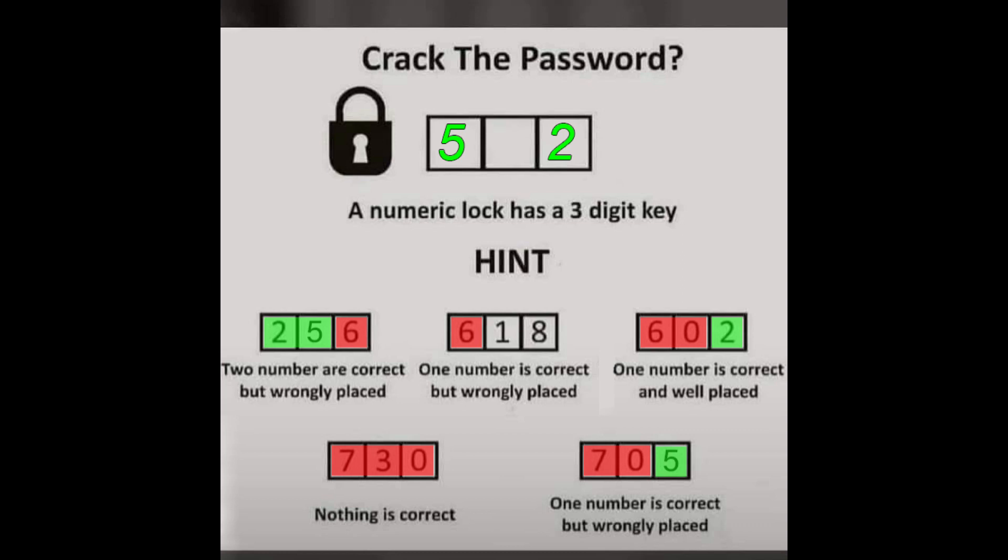Now we are left with the last number which is in the middle place. We can solve this using the second hint where we have one correct number but not in the correct place. It can't be number one because if it is, it would be in the correct place. So it must be the only number left, which is number eight.